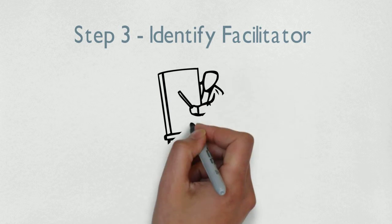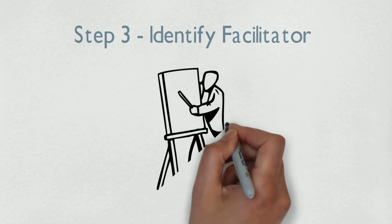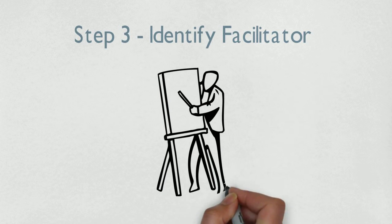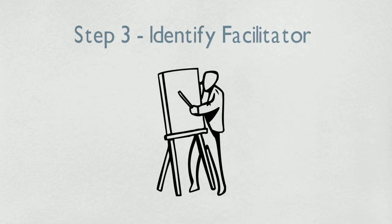Step three: solicit help from an objective facilitator. Identify someone who can facilitate the process and keep the group focused on the task at hand — creating a mission, vision, and value statement.